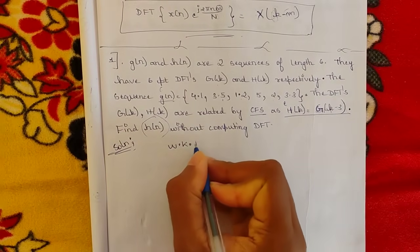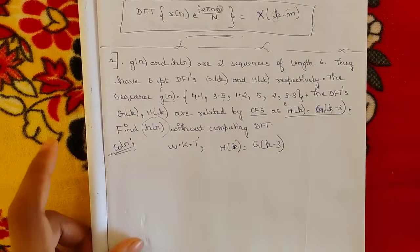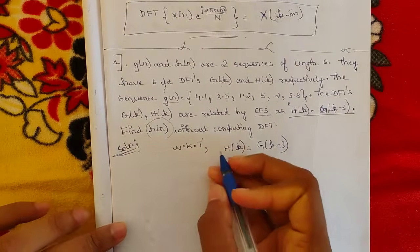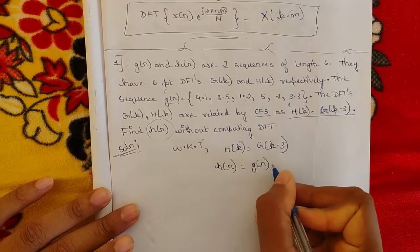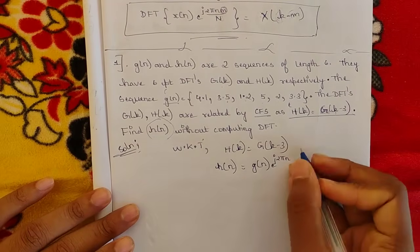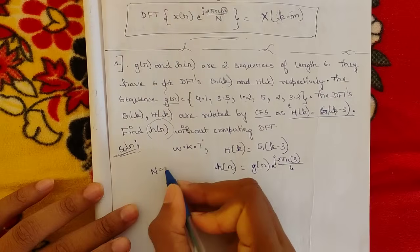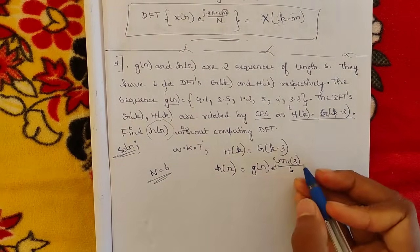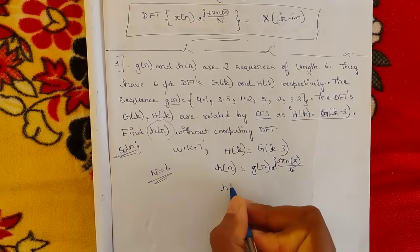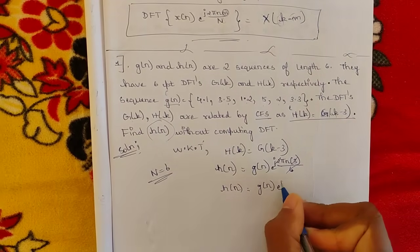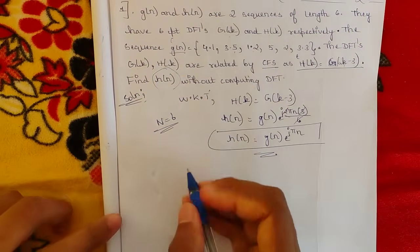Find h(n) without computing the DFT — just use the formula. From the question, H(k) = G(k − 3). Applying the circular frequency shift property, H(k) converts to: h(n) = g(n) · e^(j·2πn·3/6). Since 3/6 simplifies, the two threes and the six cancel, leaving h(n) = g(n) · e^(jπn). We now substitute values of n from 0 to 5.